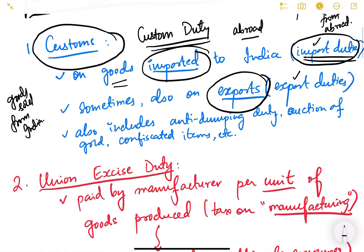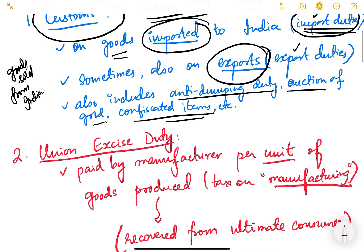Custom duty also includes the anti-dumping duty, auction of gold, and confiscated items. Anti-dumping duty is basically a duty which is imposed on imported goods in order to save domestic industries.